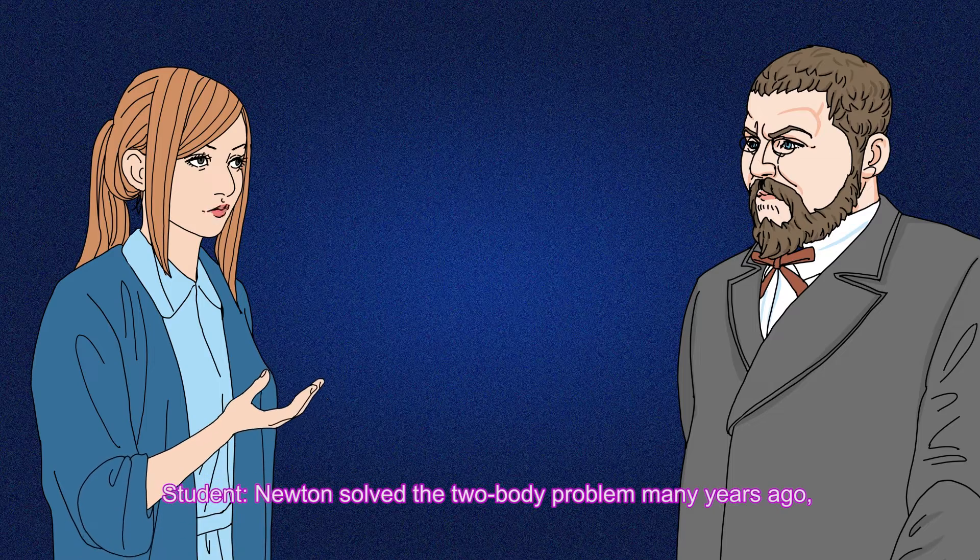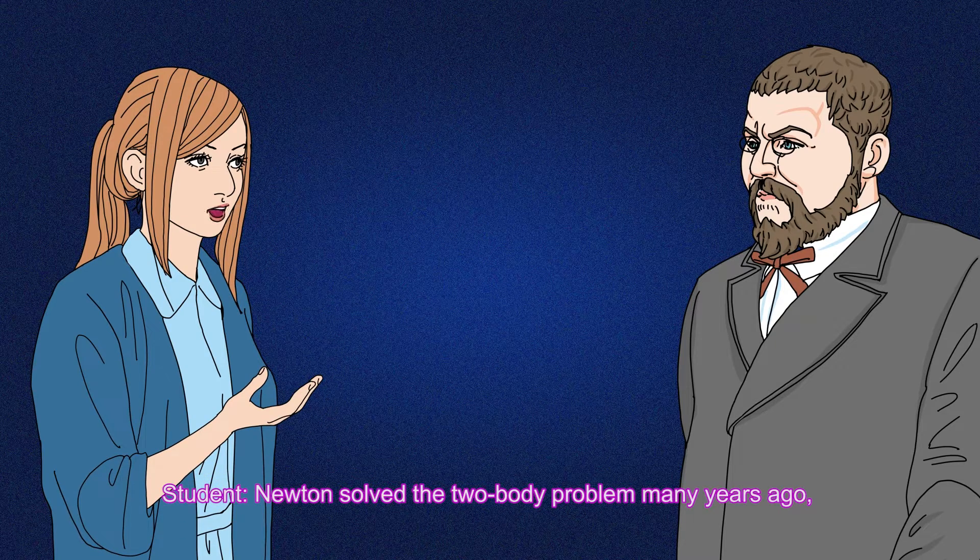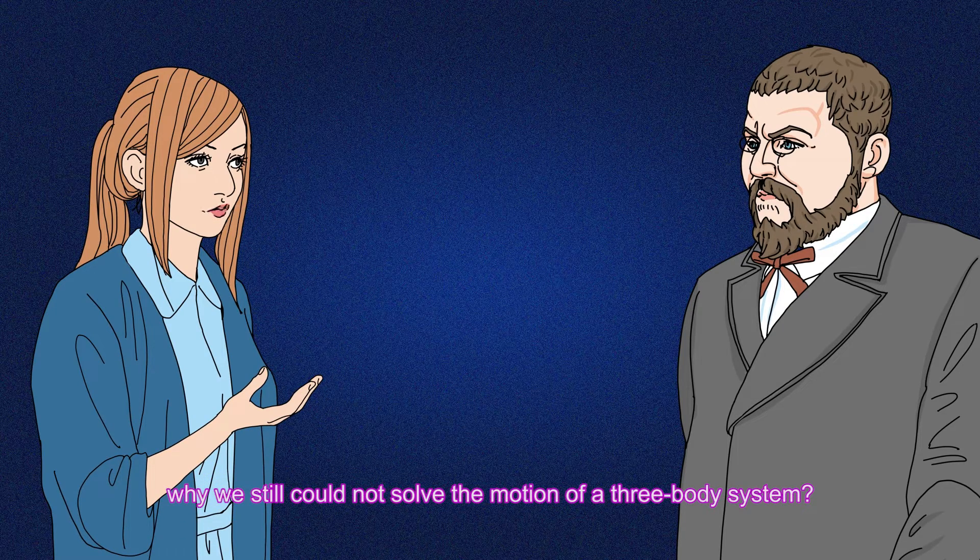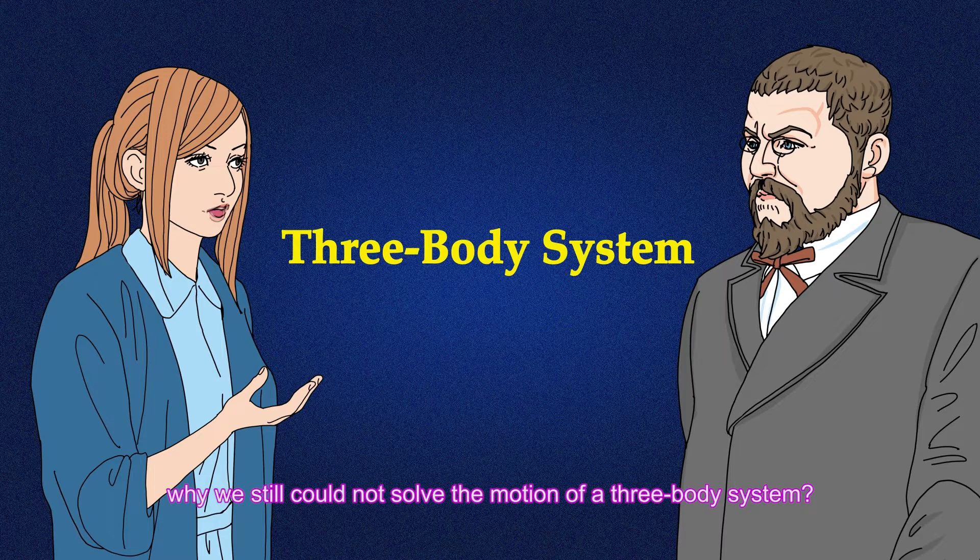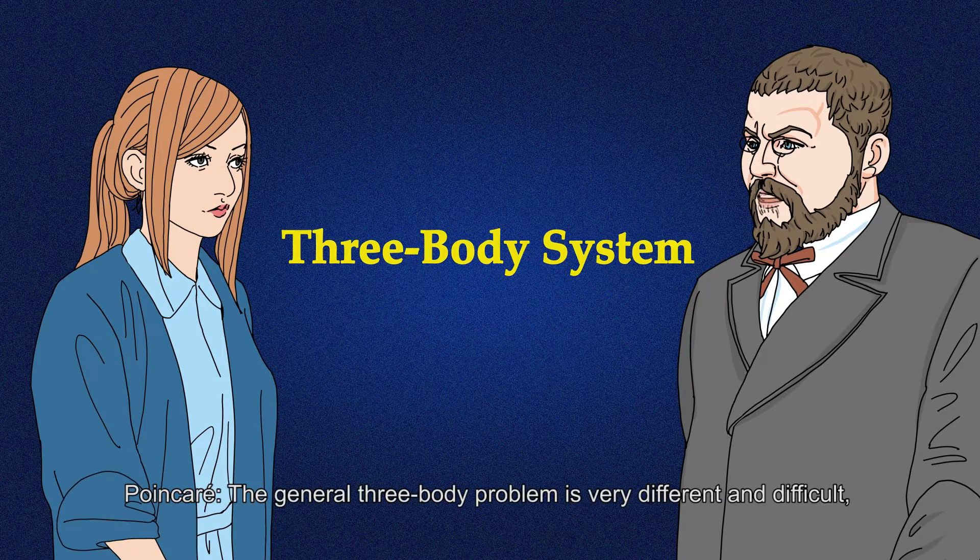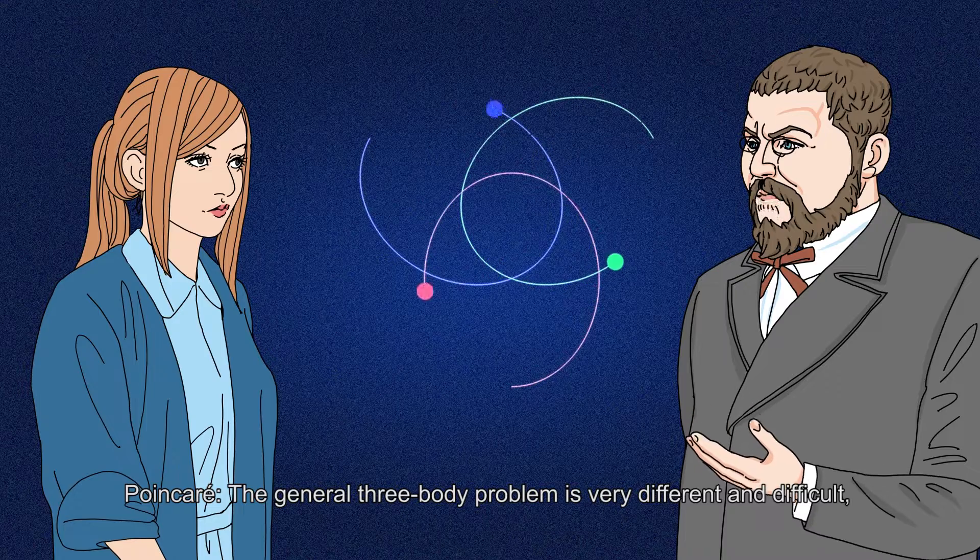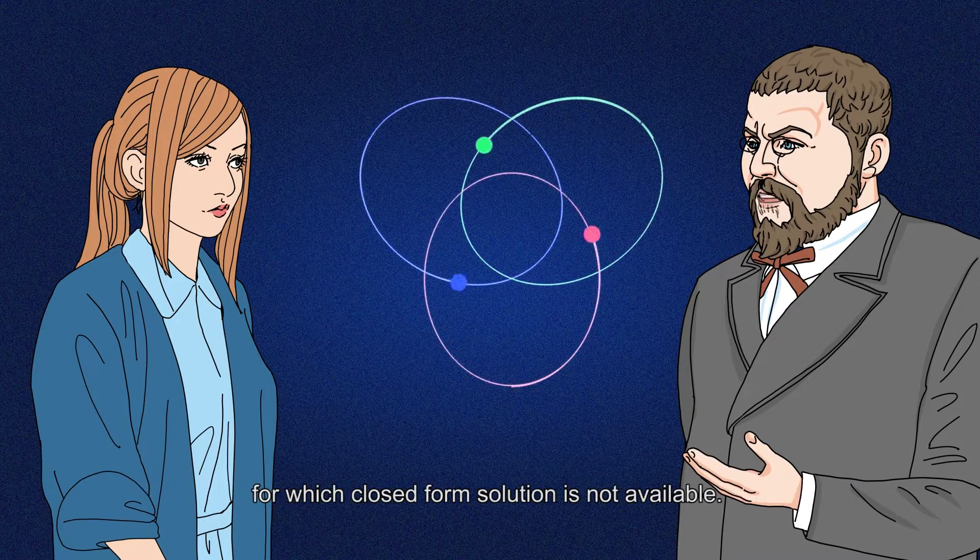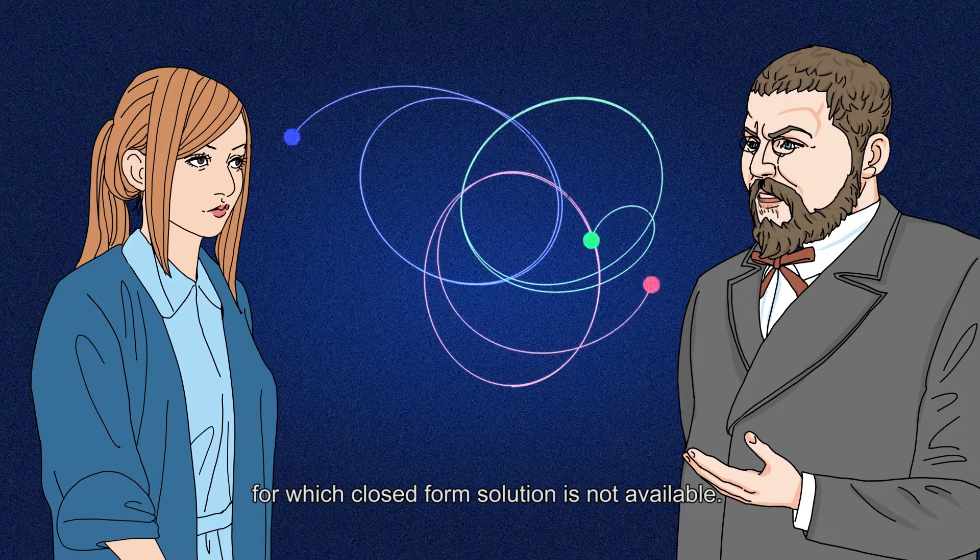Newton solved the two-body problem many years ago. Why we still could not solve the motion of a three-body system? The general three-body problem is very different and difficult, for which closed-form solution is not available.